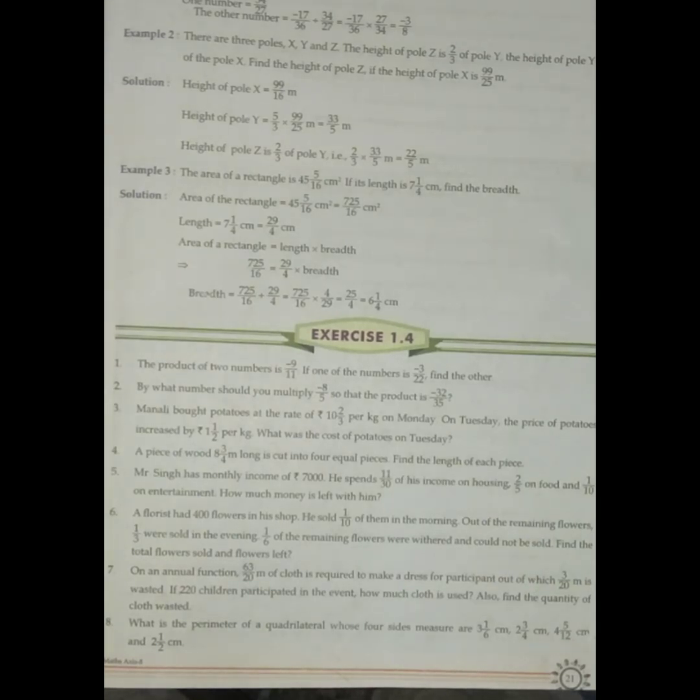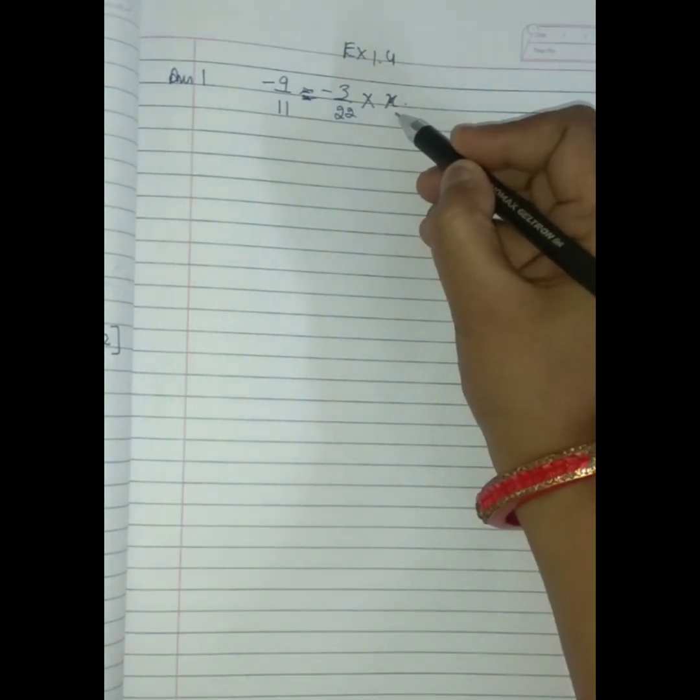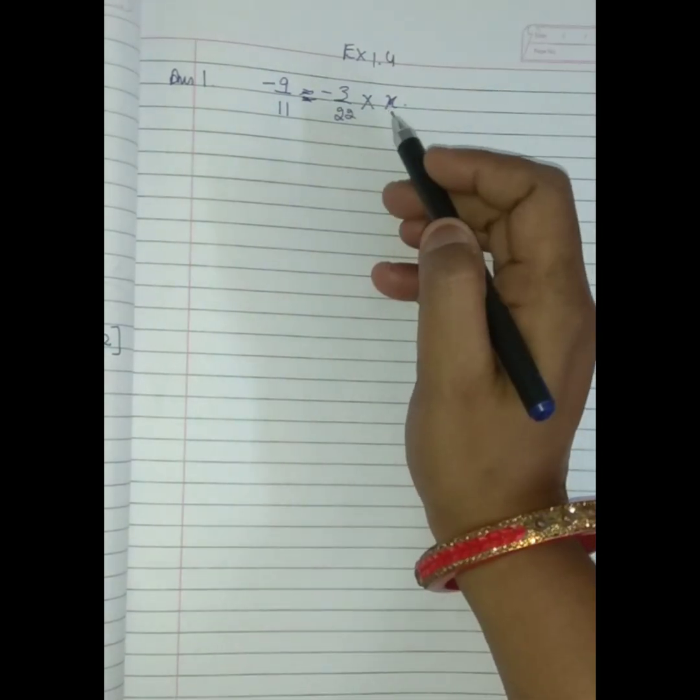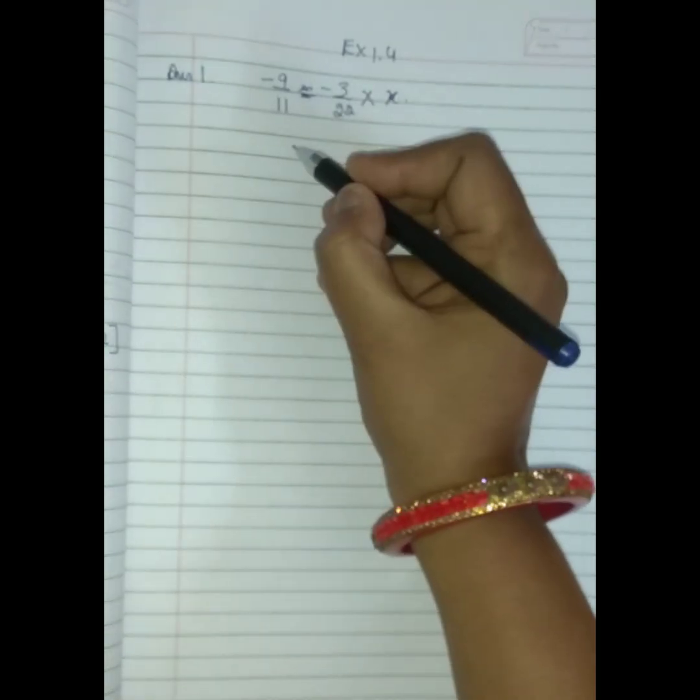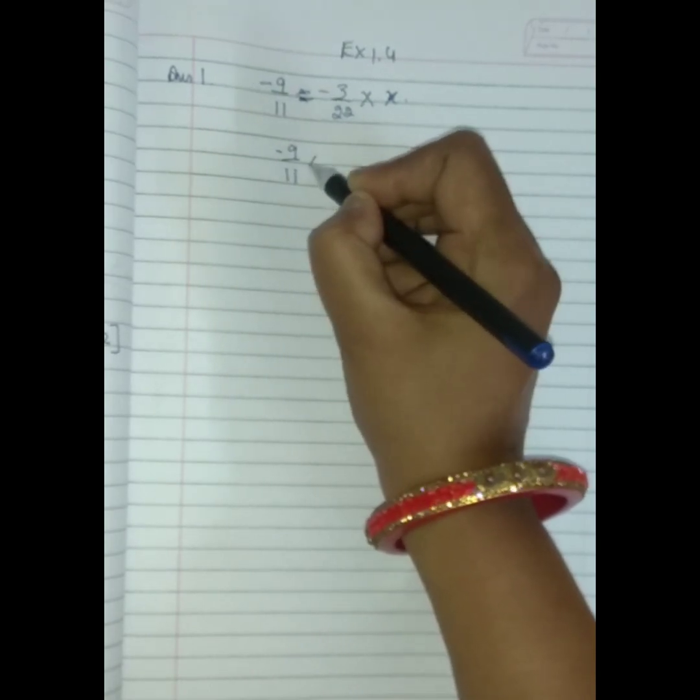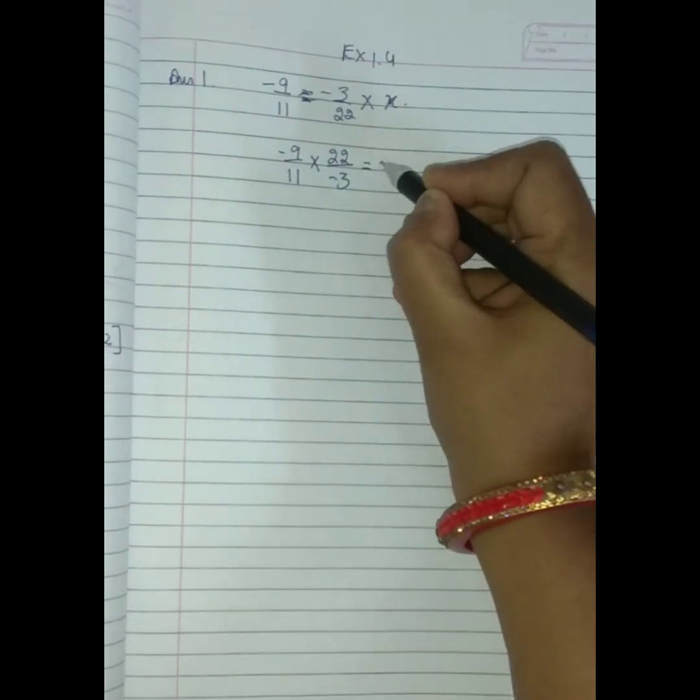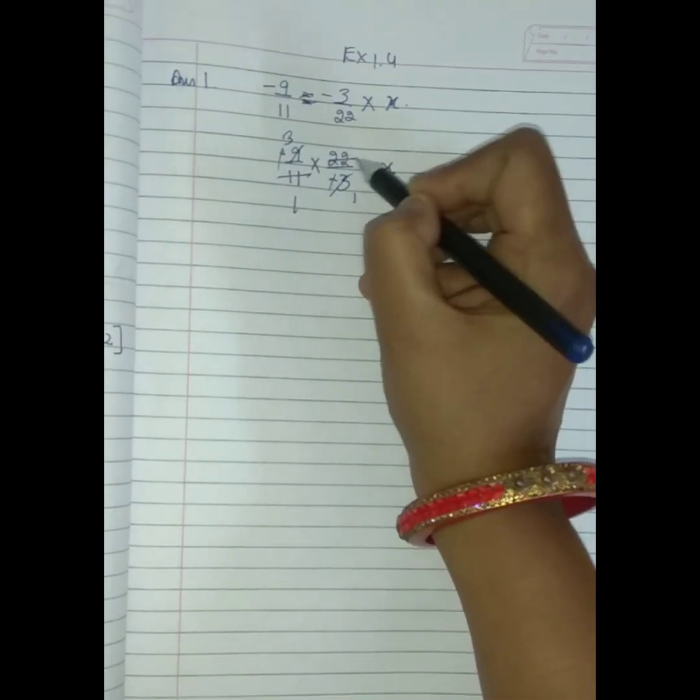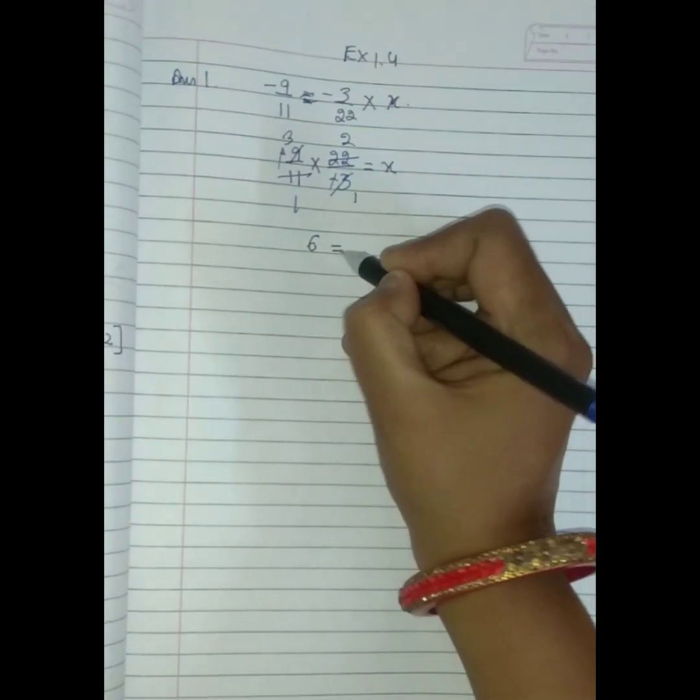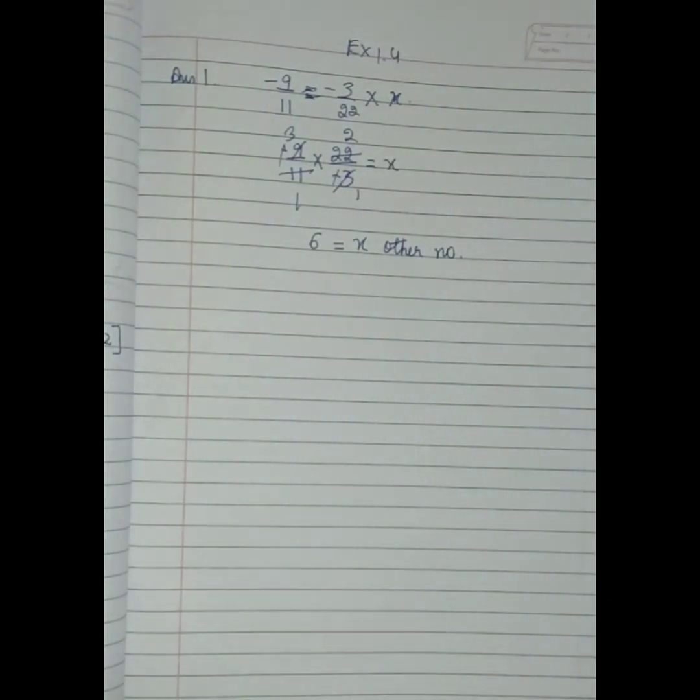Now let's see practically. The product of the number is this one, and one number is this one. Another number we kept X. What we will do? X means the other number. I hope student, this is clear to you. That's good.